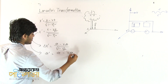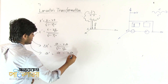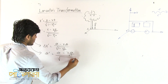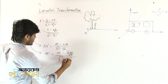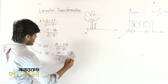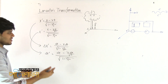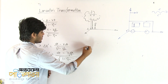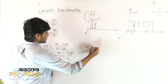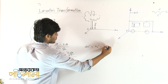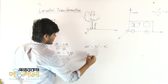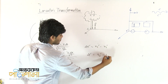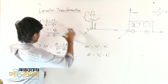The Lorentz transformation formula involves division by c, square root over 1 minus v squared by c squared. You need to do this. Delta x prime equals to x2 prime minus x1 prime. Delta t prime equals to t2 prime minus t1 prime.